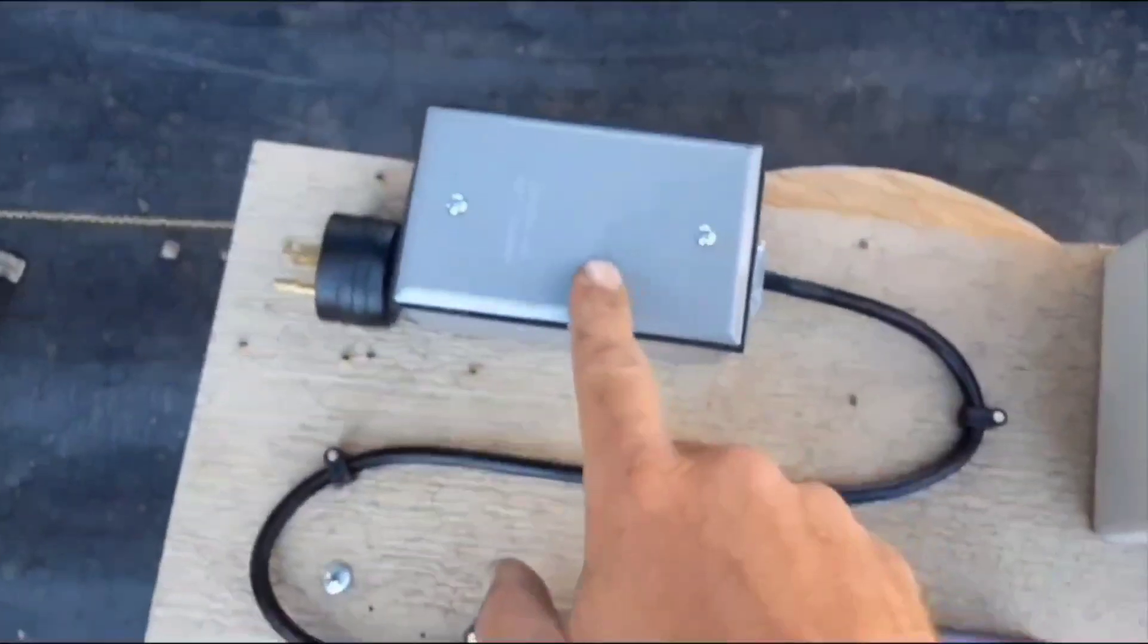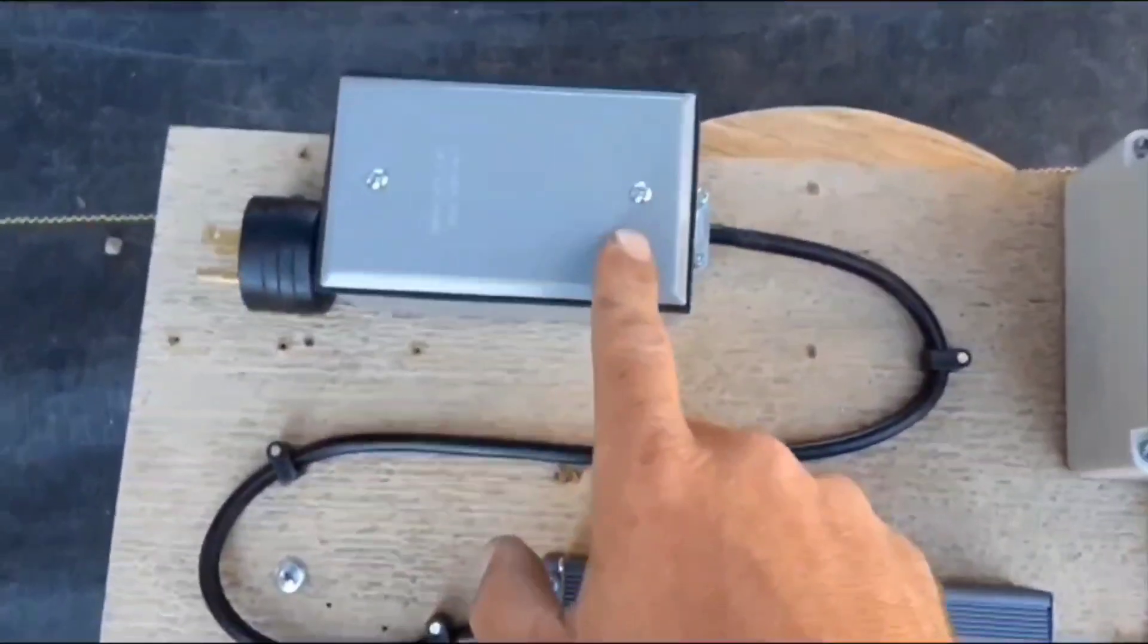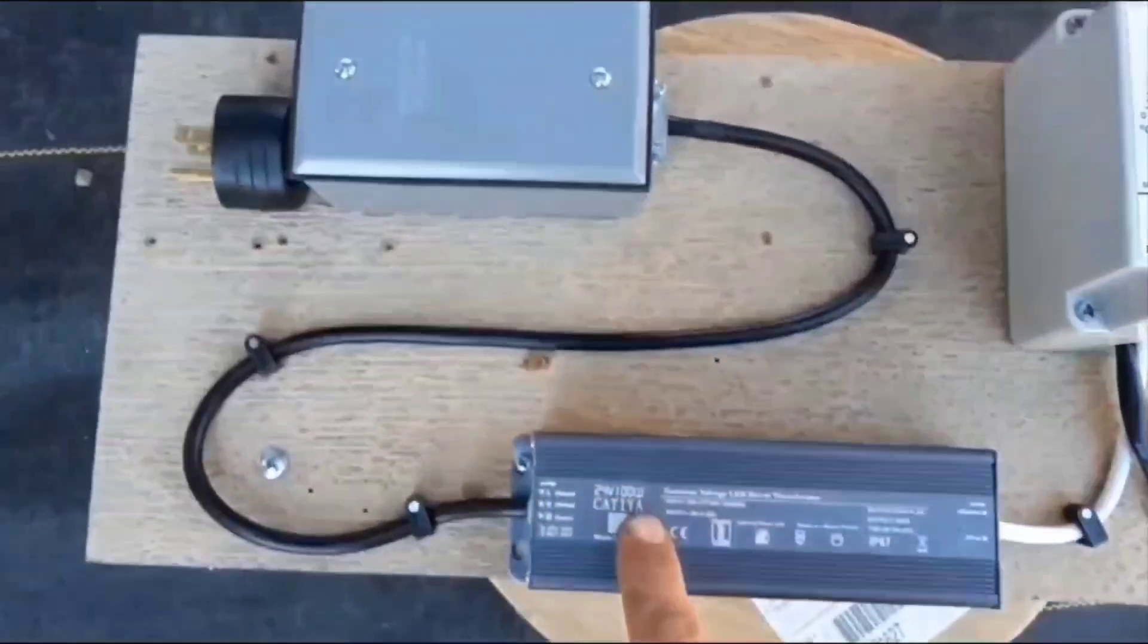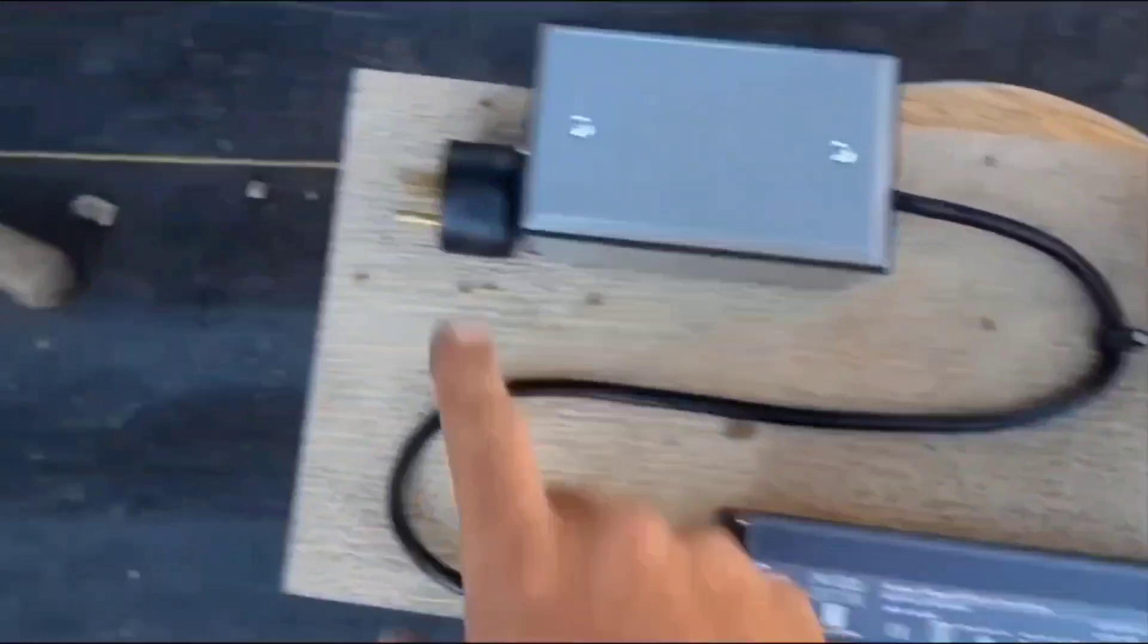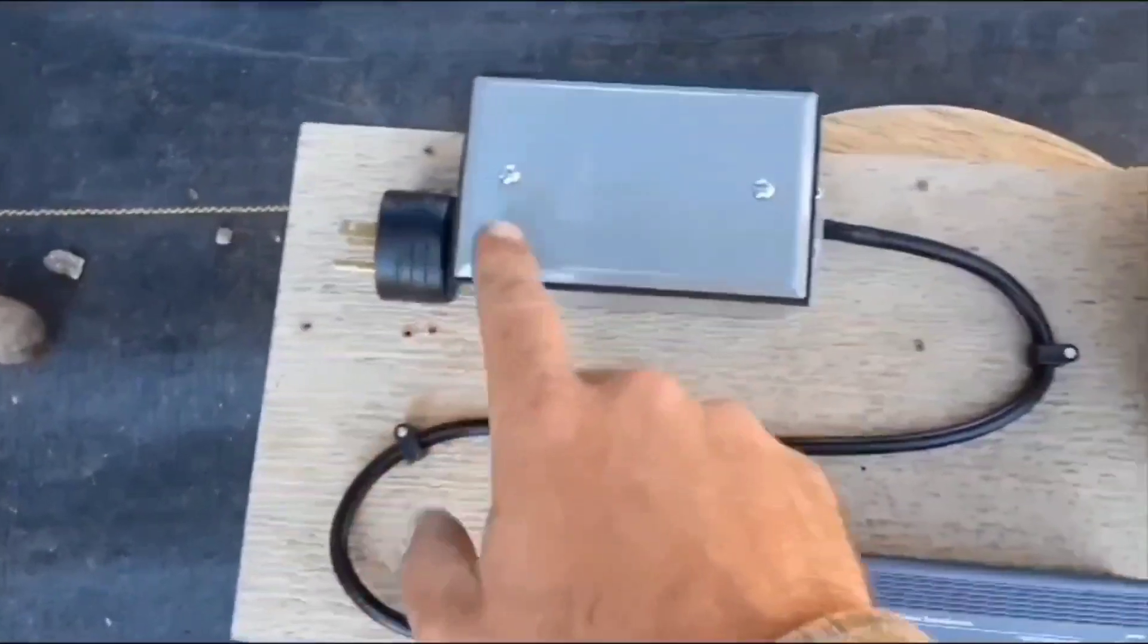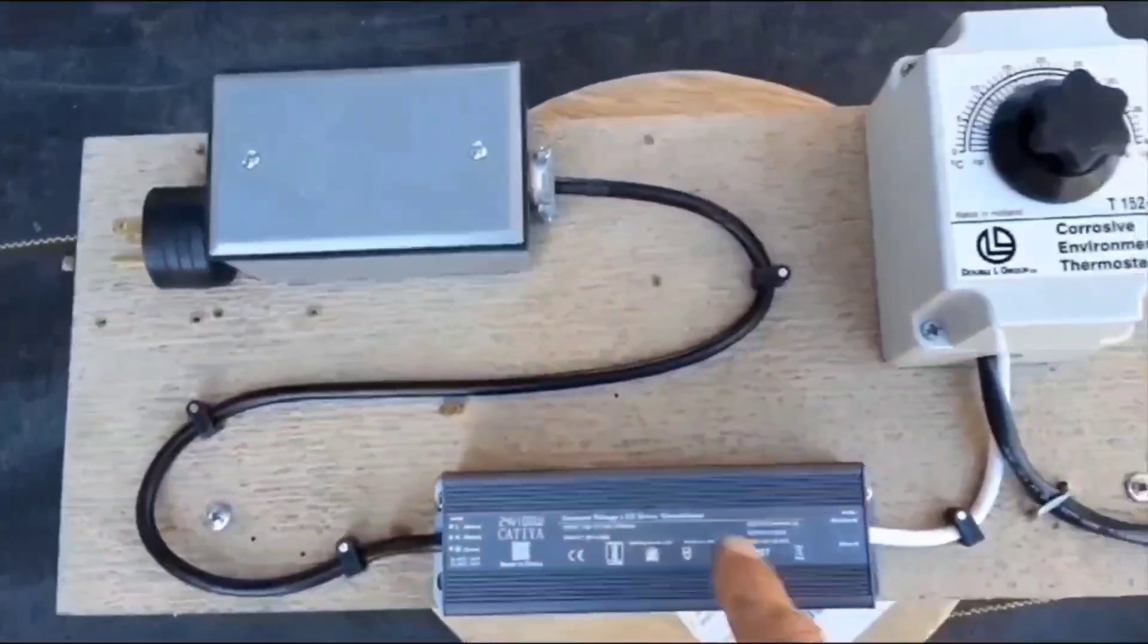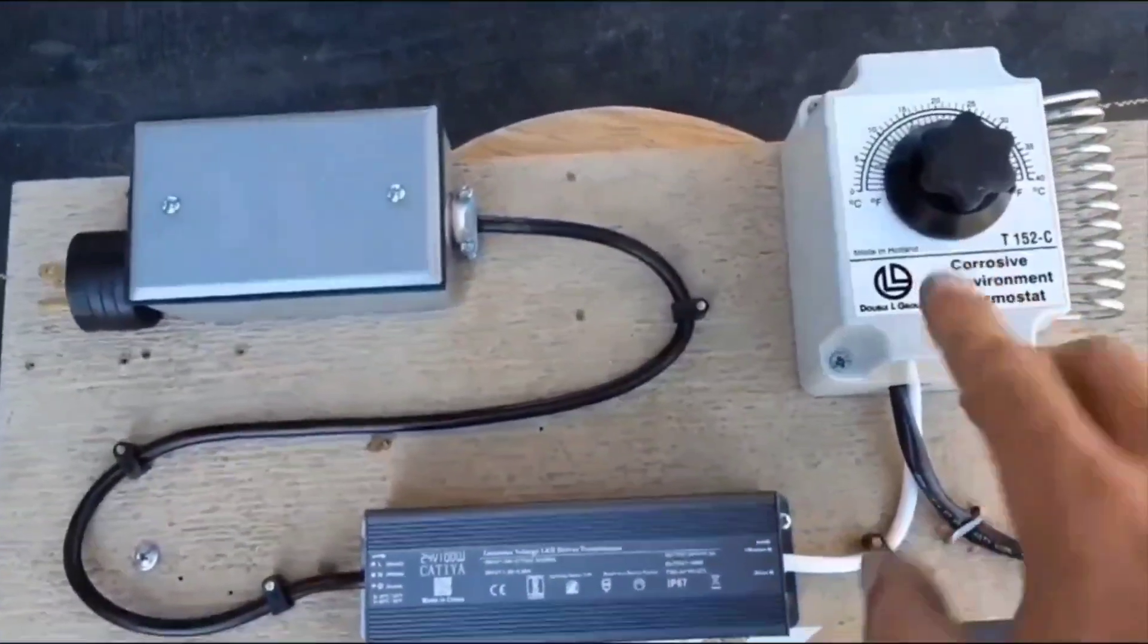This over here is just a junction box for power hookup later. It just powers the converter. And I just have a plug on it. So I'll just plug an extension cord in for now. Powers it. Switch to 24 volts into here.